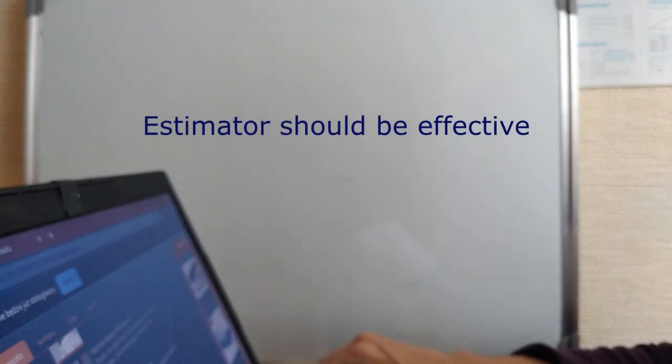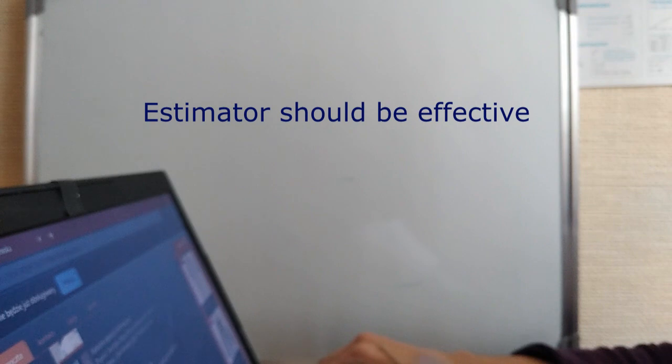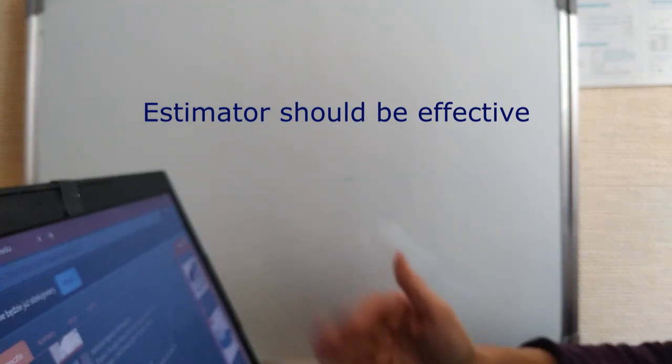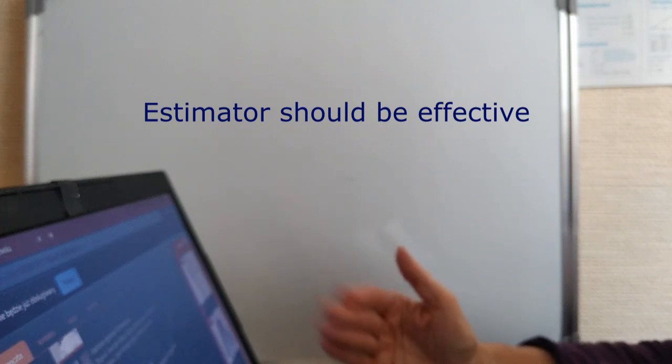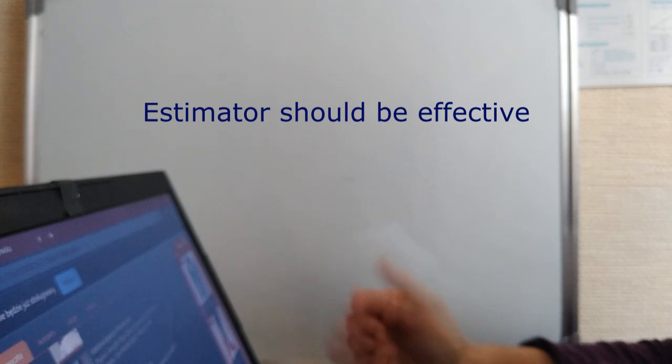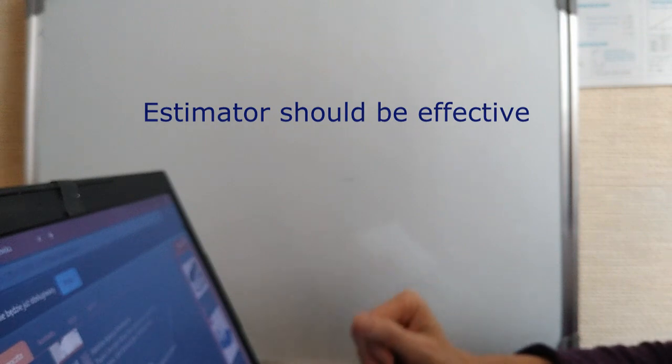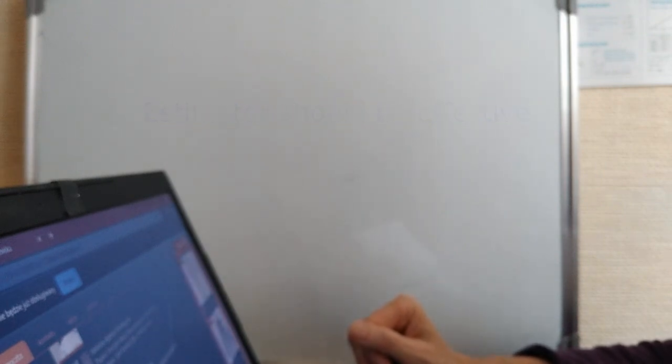Thirdly, a good estimator should be effective. Telling the truth, the variance of an estimator, you can imagine a variance of estimator as kind of chaos in the measure of the population parameter. So the variance of the estimator is never zero, it can be as small as possible, and the number as small as possible is described by Rao-Cramér theorem. So whenever the estimator is as good as to reach this minimum variance, we call it effective.